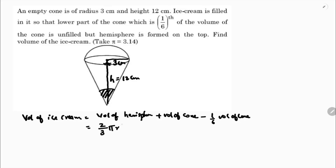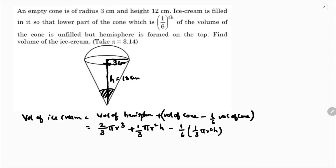Volume of hemisphere is (2/3)πr³, plus volume of cone (1/3)πr²h, minus (1/6) times (1/3)πr²h. You can take volume of cone minus one-sixth of volume of cone, or directly take five-sixths — since out of six parts, one part is unfilled, so five parts are filled.